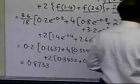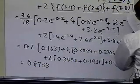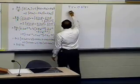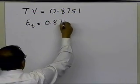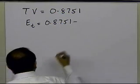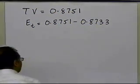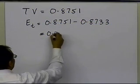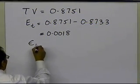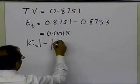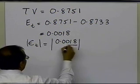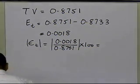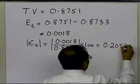Let's go ahead and see what the true error is. We know that the true value for this particular integral is 0.8751 — that is the true value. So the true error in this case is the true value, which is 0.8751, obtained by using integral calculus, minus 0.8733, which we just obtained by using the six-segment Simpson's one-third rule, and this gives us 0.0018. The relative true error is 0.0018 divided by the true value 0.8751, times 100, and this turns out to be 0.2057 percent.